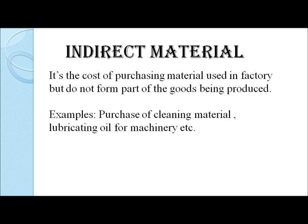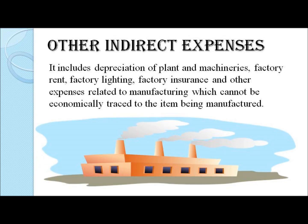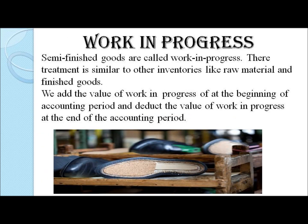Let us proceed with the other components of factory overhead. Indirect labor excludes all direct labor wages paid to those involved in production. The wages paid to other factory staff who ensure the proper running of the factory — like the supervisor's salary, the wages paid to cleaning staff, or to the administrative staff — are termed as indirect labor. Lastly, we record all indirect expenses like depreciation of plant and machinery, factory rent, factory lighting, factory insurance, and all other expenses to calculate the total factory overheads.